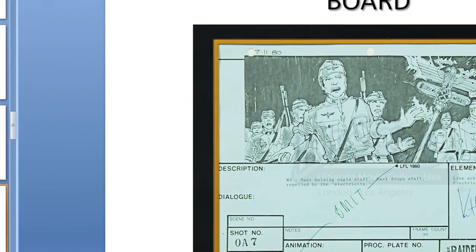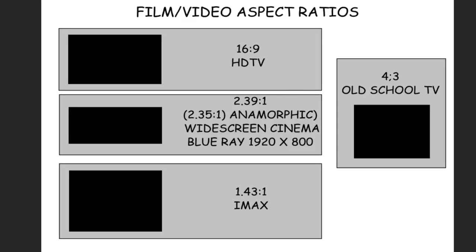What we're going to cover today is some film aspect ratios, and then in the next tutorial we'll get into actually setting up the storyboard. Film and video has a couple of standard aspect ratios. The old-school 4:3 aspect ratio is what anyone who grew up with television in the 1970s would know. That was replaced by the 16:9 widescreen high-definition television format. In terms of cinema, we have the 2.39:1 and the 2.35:1, which is the anamorphic or widescreen cinema format — also known as the 1920 by 800 Blu-ray format.